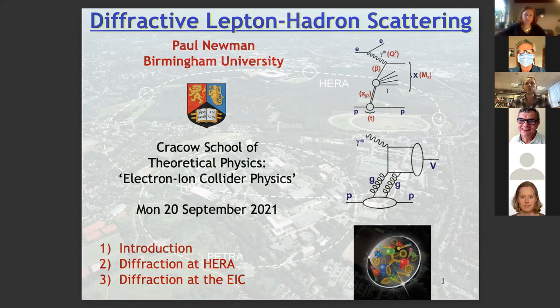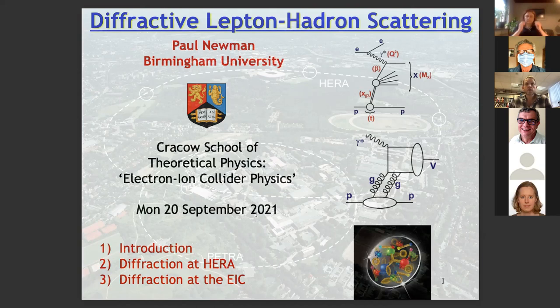There are a couple of diagrams we'll come back to later in the talk on the sort of physics processes taking place, but I very much like the artist impression type illustrations. On the bottom is the sort of structure we're trying to reveal. Most of the existing physics results on diffractive lepton-hadron scattering come from HERA, so I'll talk about HERA for most of this talk, and then say a few things about the EIC at the end.